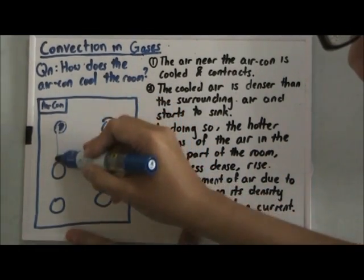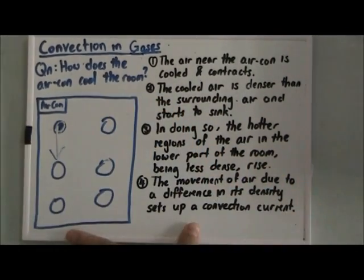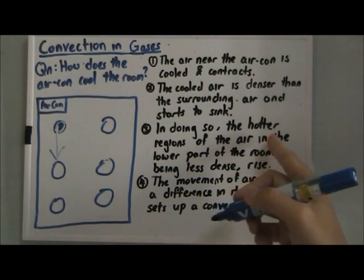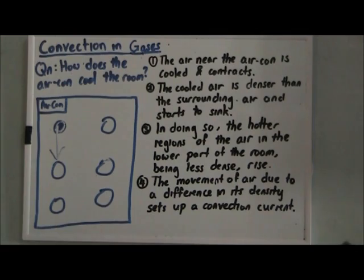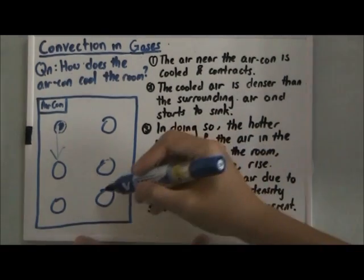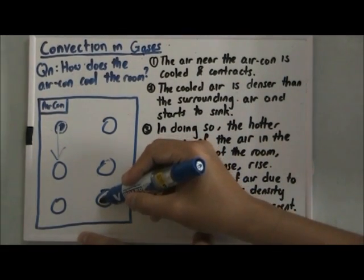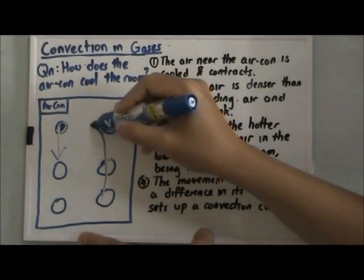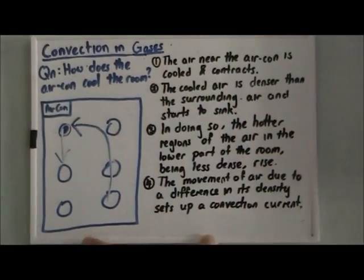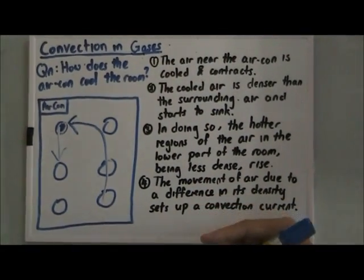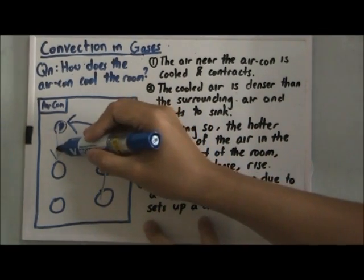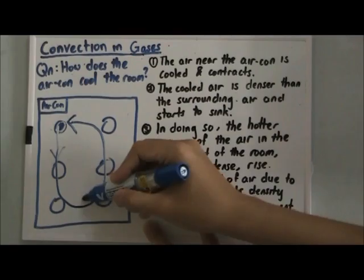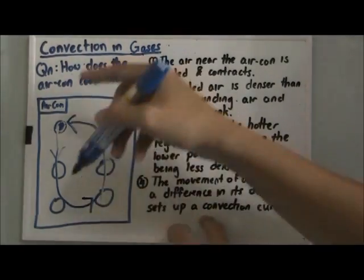In doing so, the hotter region of the air in the lower part of the room, being less dense, will rise. So all the air regions here will rise. This movement of air due to a difference in its density will set up the convection current, which looks like a circle.